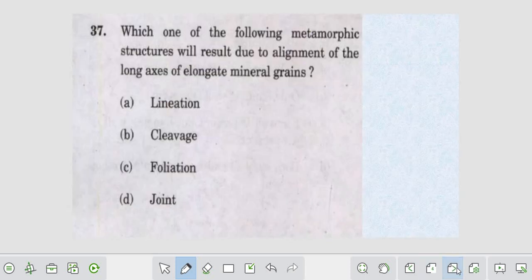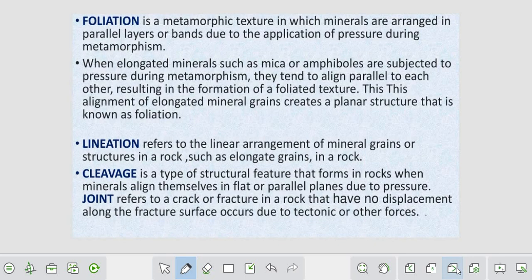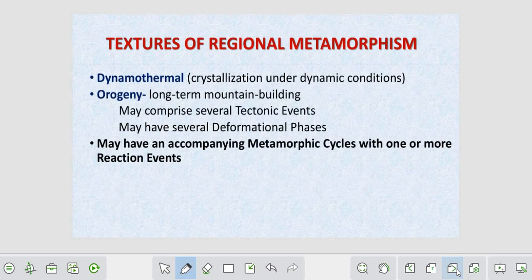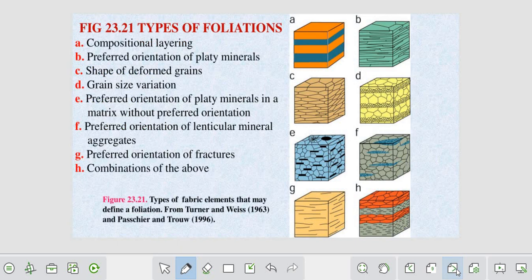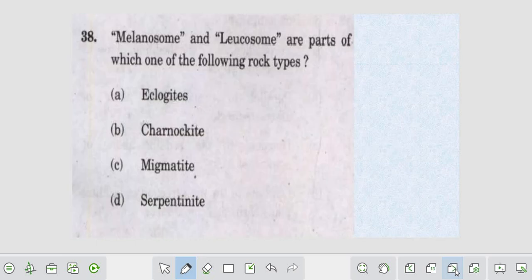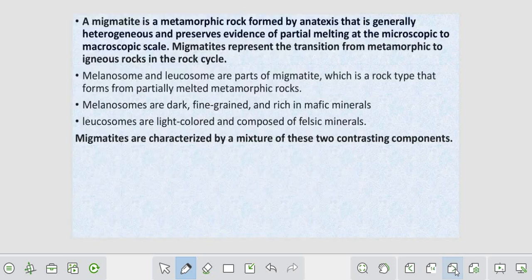We already discussed foliation and lineation, and how metamorphic textures form due to phase transformation, metamorphic reaction, and new crystal formation. We discussed tectonite, what fabric is, different types of compositional layering, how grains deform and make foliation, and the processes involved. We also discussed migmatite and leucosome - how metamorphic rocks are characterized by stigmatic folding.